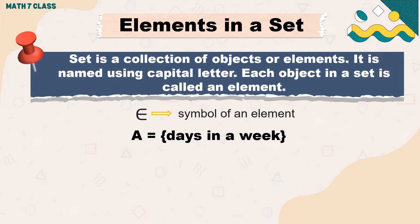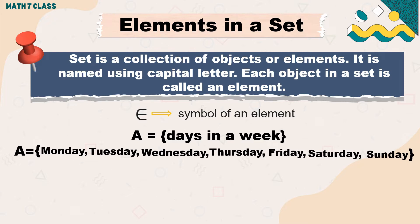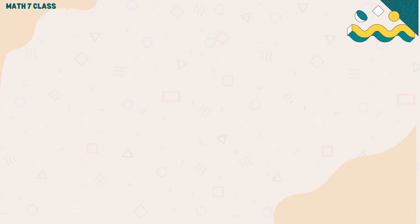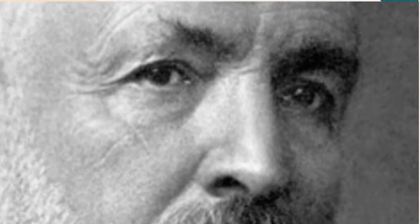For example, Set A is a set of days in a week. The days in a week are Monday, Tuesday, Wednesday, Thursday, Friday, Saturday, and Sunday — these are the elements of Set A. In symbol, we can write: Tuesday is an element of A. Another example: Sunday is an element of A.